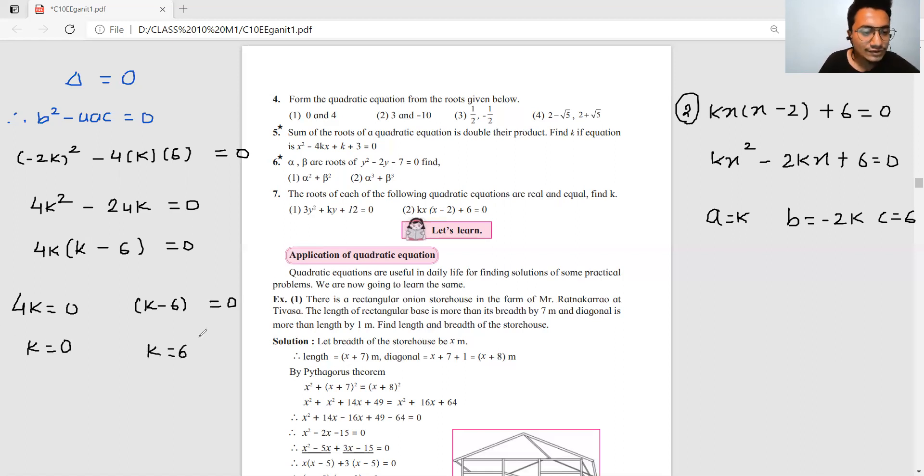Using discriminant equals zero: b square minus 4ac equals zero. So 4k square minus 4 times k times 6 equals zero. This gives 4k square minus 24k equals zero, so 4k times k minus 6 equals zero. K value is 0 or k value is 6. We cannot put k value as 0 because then it won't be a quadratic equation. Therefore k value is 6.